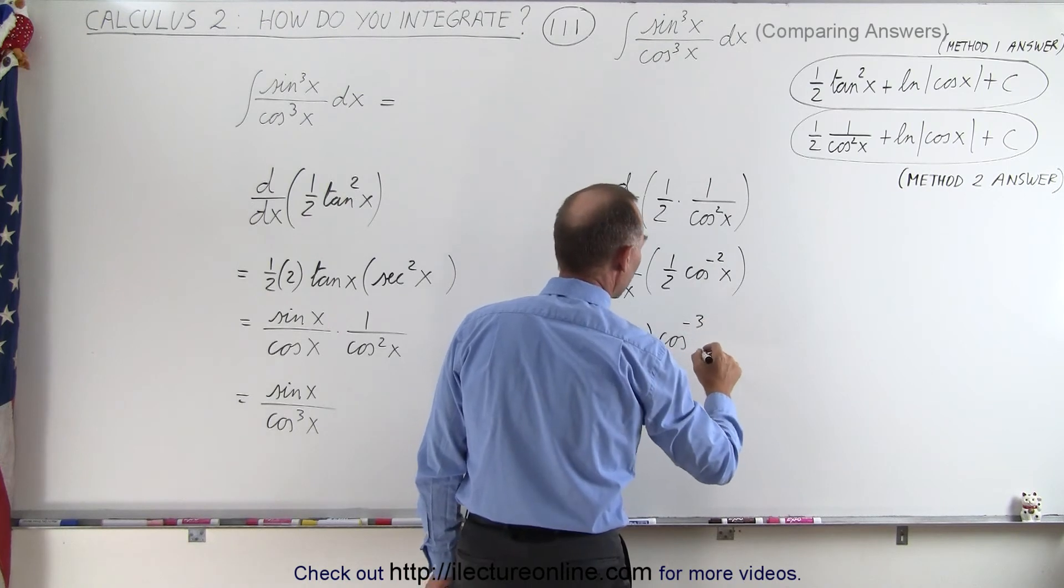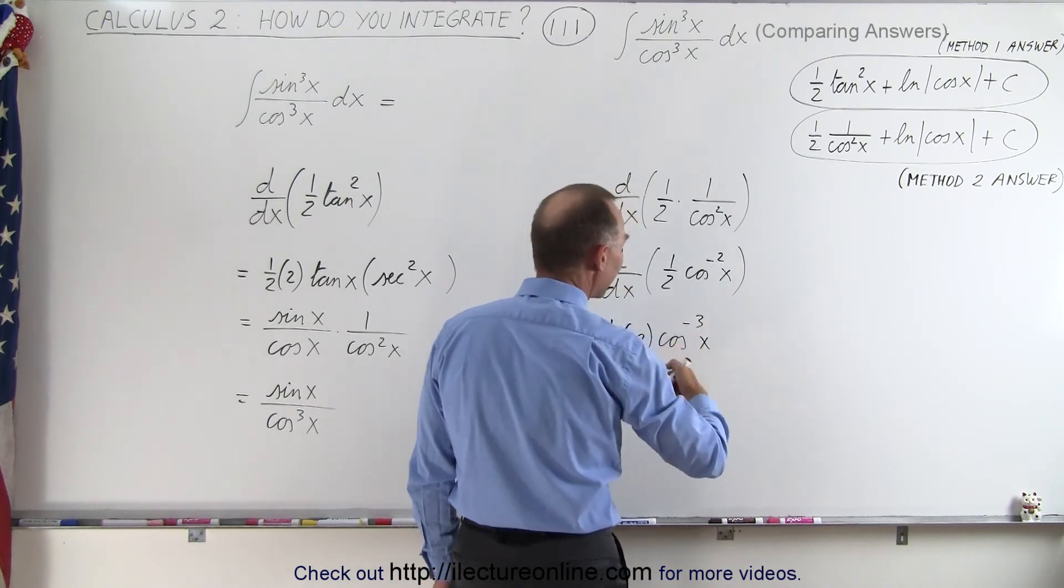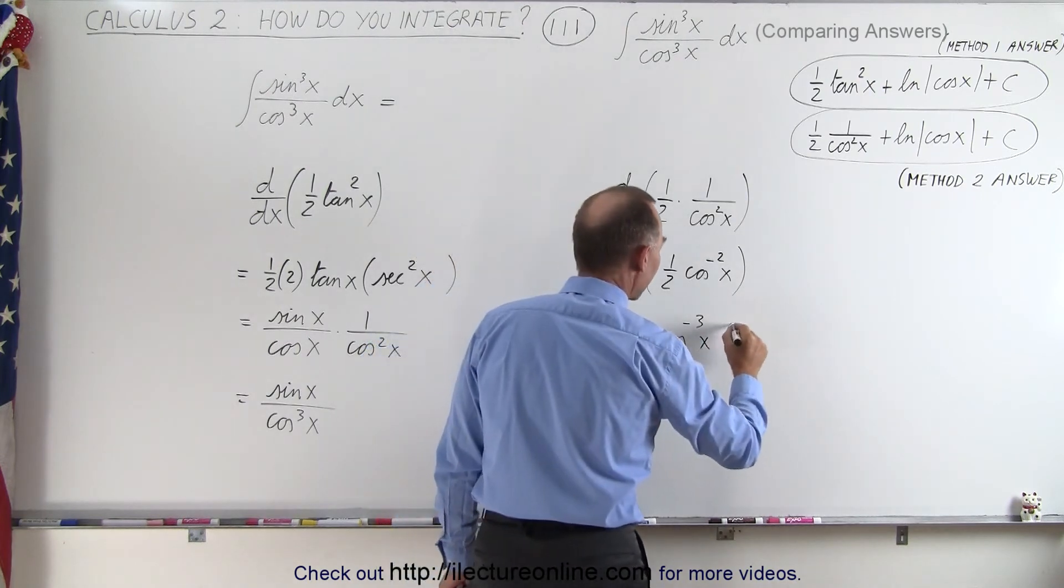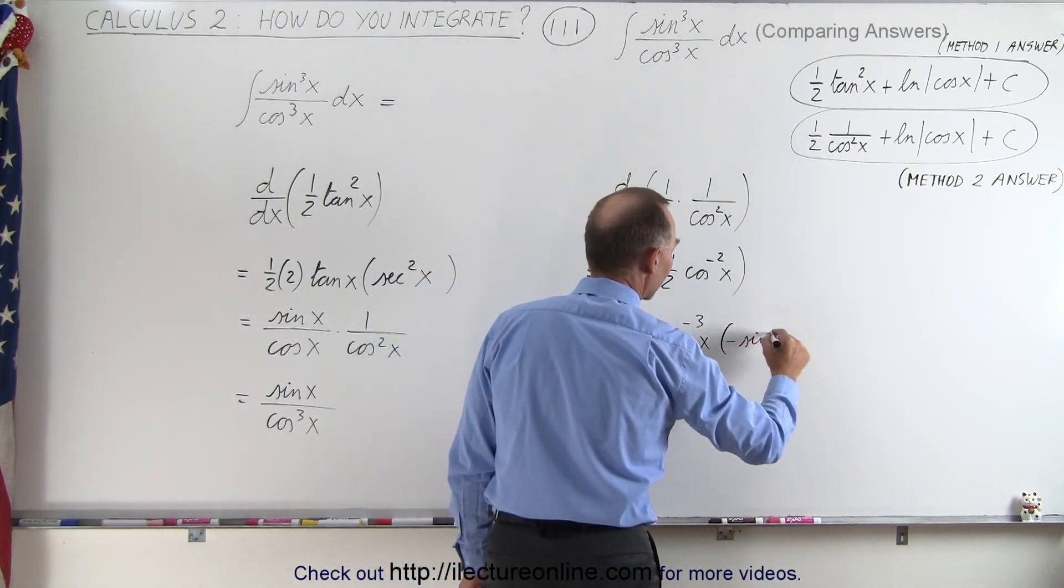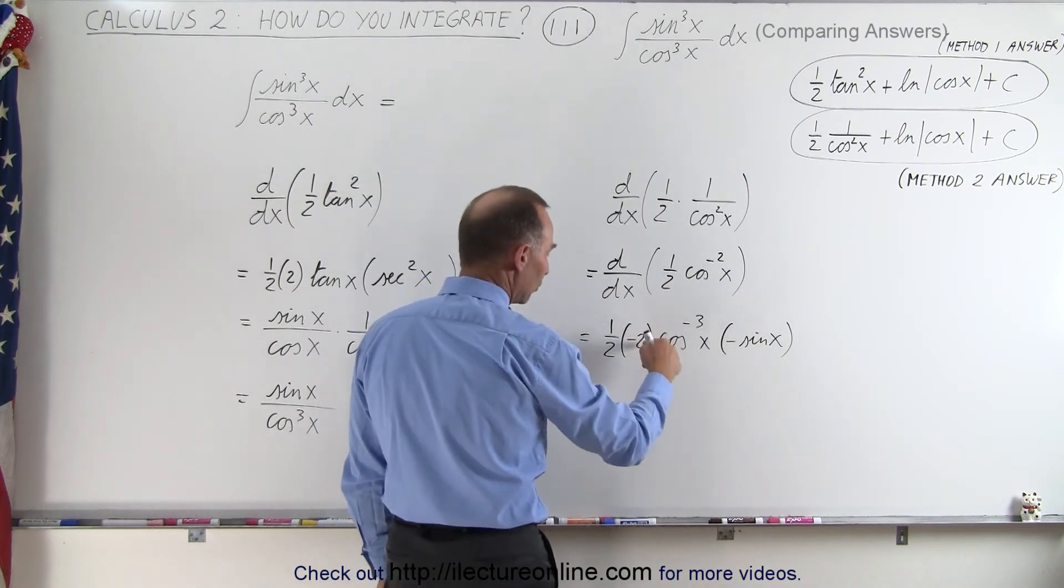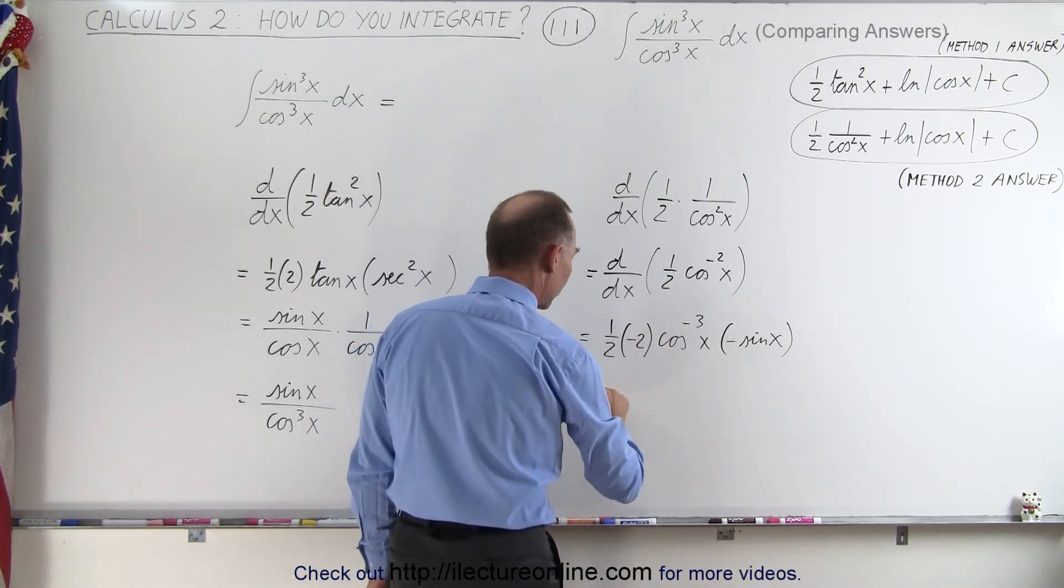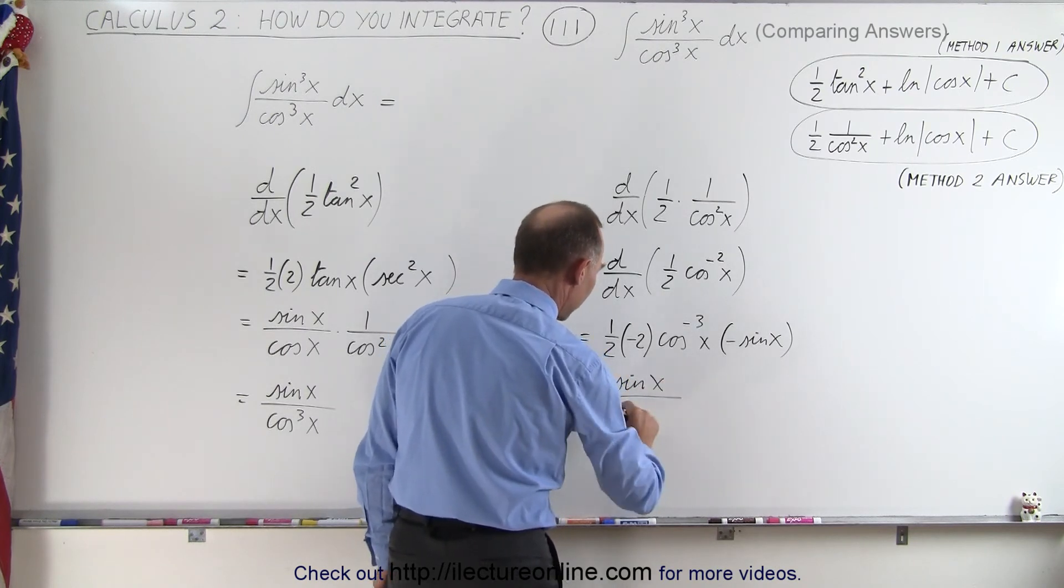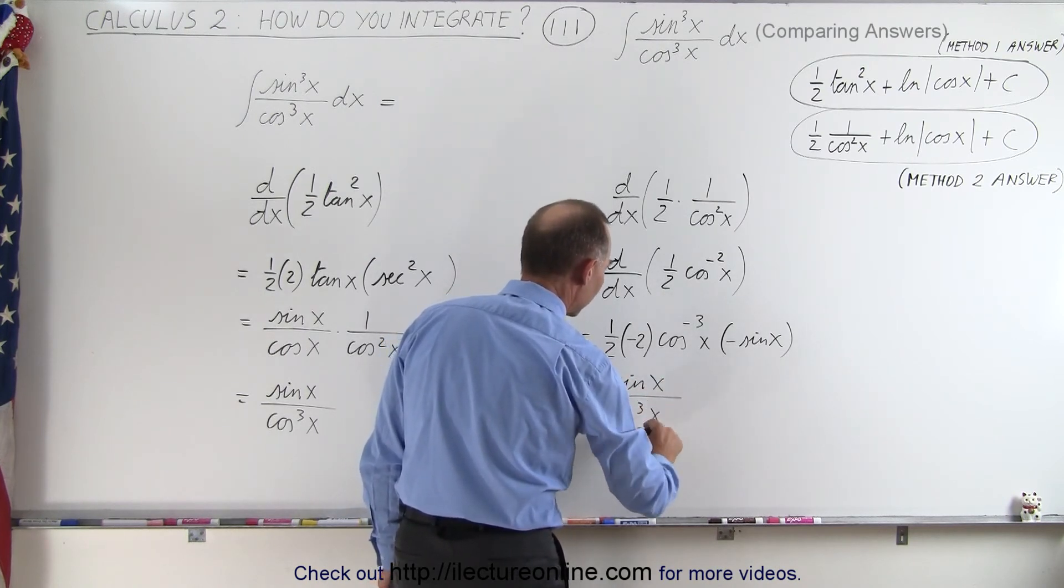Now minus three of x times the derivative of the cosine of x and the derivative of the cosine is the negative sine. So times the negative sine of x. Notice that this negative will cancel out with this negative. The two cancels out as well. So this becomes equal to the sine of x in the numerator divided by the cosine cubed of x in the denominator.